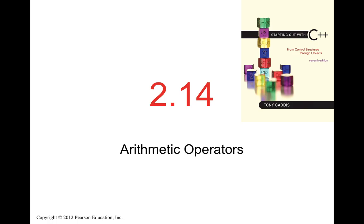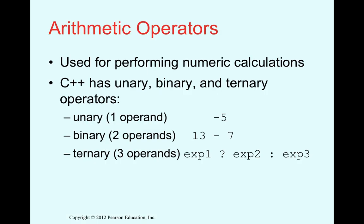The next section covers arithmetic operators. We have three types: unary operators (applied to one operand, e.g., -5), binary operators (applied to two operands, e.g., 13 - 7), and ternary operators (involving three things, which we will study later with the if-else statement).